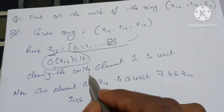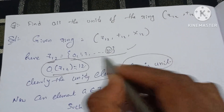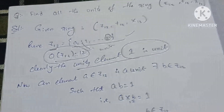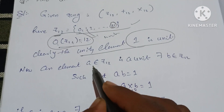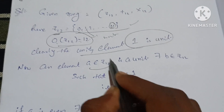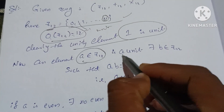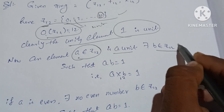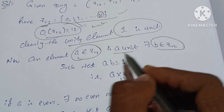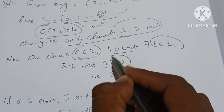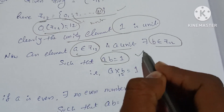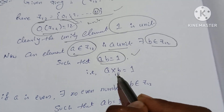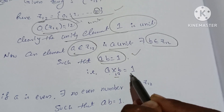Clearly, the element 1 is a unit. An element A belonging to Z₁₂ is a unit if there exists B belonging to Z₁₂ such that A·B = 1, meaning A into B, multiplication modulo 12, is equal to 1.